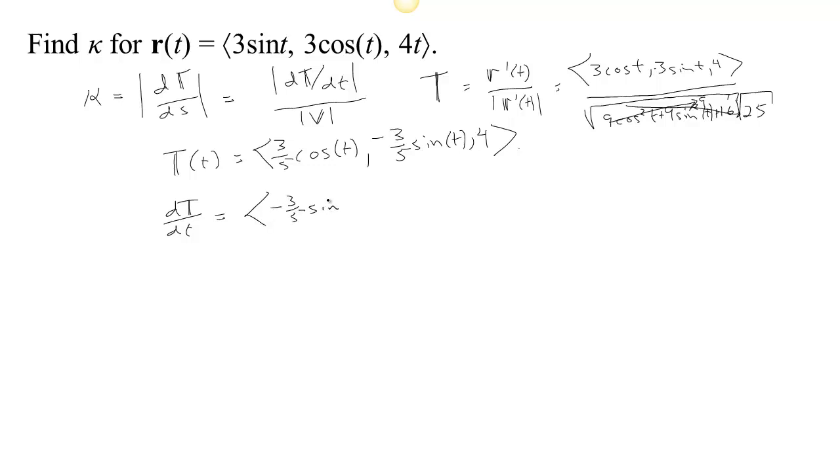So we get ⟨-3/5 sin t, -3/5 cos t, 0⟩. If we calculate the length of d unit tangent d time, we get the square root of 9/25 sine squared t plus 9/25 cosine squared t plus 0, which is the square root of 9/25, which is 3/5. So that's the length of d unit tangent d time.